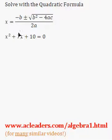Solve with the quadratic formula for x, of course. x squared plus 7x plus 10 equals 0.